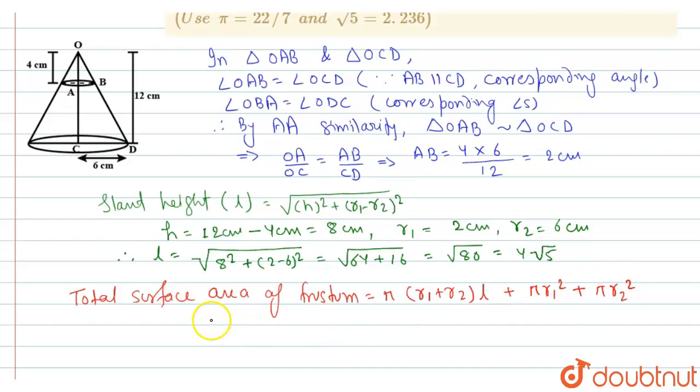So this will be equal to taking pi as common: R1 is 2 plus R2 is 6 into L is 4 root 5, added to pi R1 is 2 square, plus pi into R2 is 6 square.